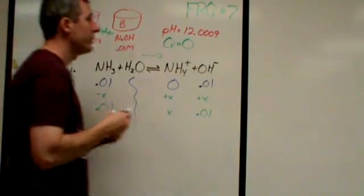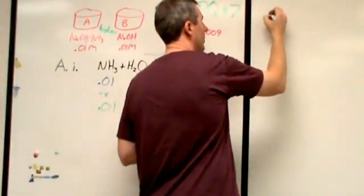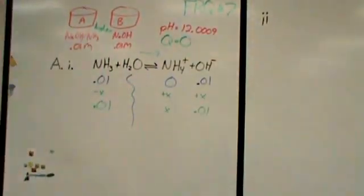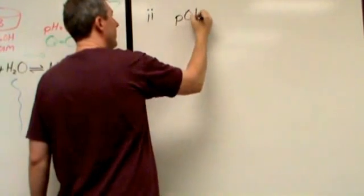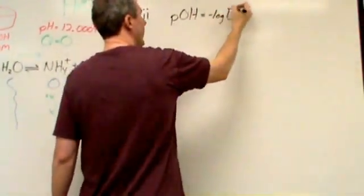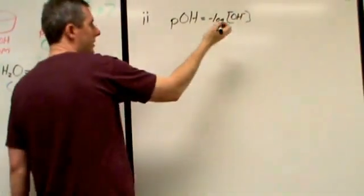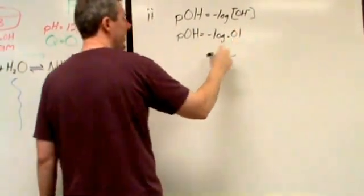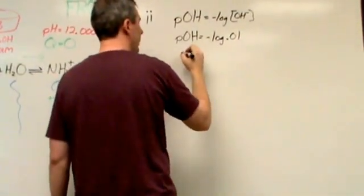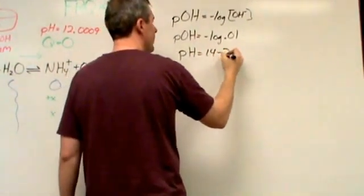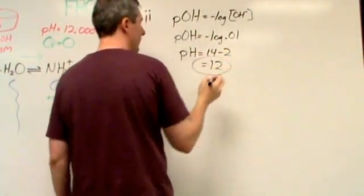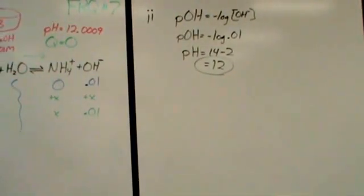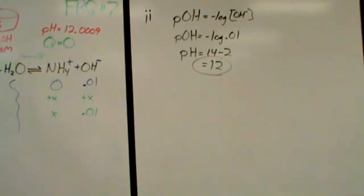In part two, it then says, what's the pH of beaker B? And pH of that, really simply, is going to be found from the pOH, which is the negative log of your hydroxide concentration. And this is 0.01. So my pOH is the negative log of 0.01. So my pH is then going to be 14 minus that 2, which will be 12. So I'm dealing with a pH of 12 in one beaker, 12.009 in the other one, and then we're going to move on from there.